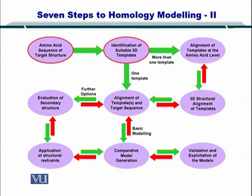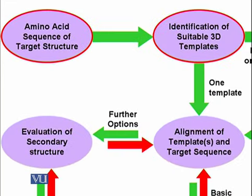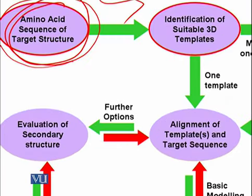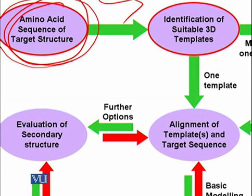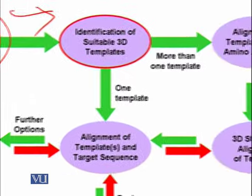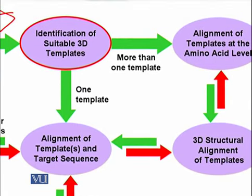This was the flowchart for looking at homology modeling as well as ab initio and fold recognition. We are going to start from here and move towards identification of suitable 3D templates. We started from the amino acid sequence of the target structure and we now want to identify suitable 3D templates which could be used for the prediction of the structure.